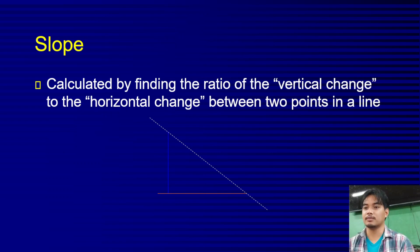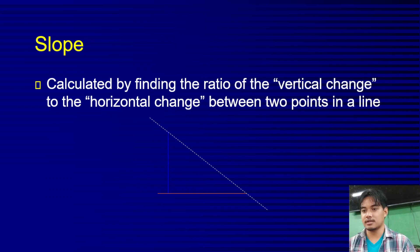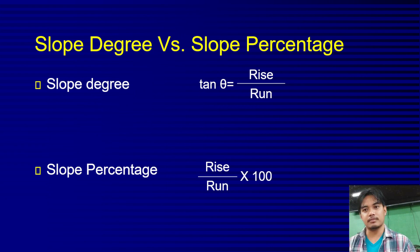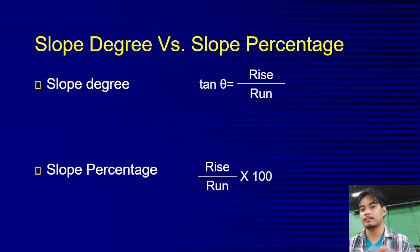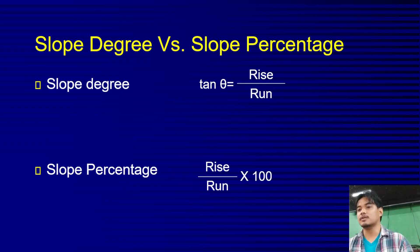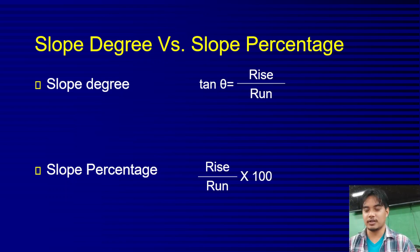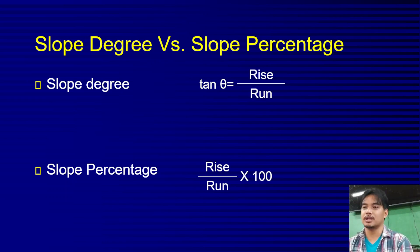Slope is calculated as the ratio of vertical change to horizontal change. Slope can be expressed as slope degree or slope percentage. For slope degree, that is tangent theta — tangent theta equals rise over run. For example, with a rise of 100 meters and a given run, you can compute the slope degree.